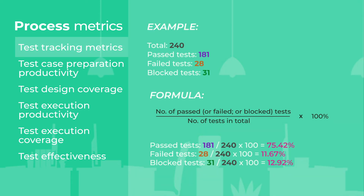Test tracking metrics show the percentage of passed, failed, and blocked tests. For example, if we have 240 test cases in total — 181 passed, 28 failed, and 31 blocked — to calculate the percentage of passed tests, you divide their quantity by the total number of executed tests.